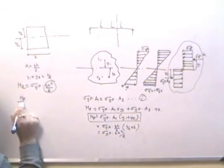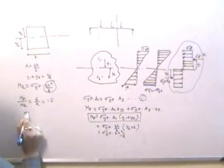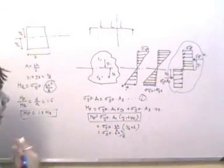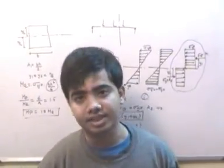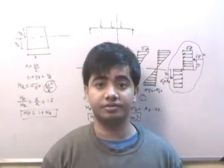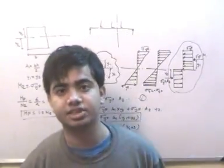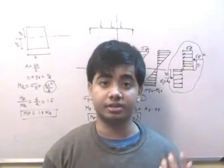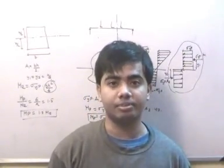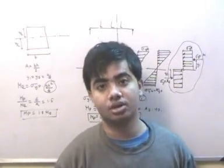Therefore Mp/Me = (BH²/4)/(BH²/6) = 6/4 = 1.5, so Mp = 1.5·Me. We can conclude that with limit design, the plastic moment a beam can carry is 50% larger than the elastic moment. In the next lecture we will examine non-rectangular and circular cross sections, and in the lecture after that we will look at the concept of plastic hinges. Thanks for listening.